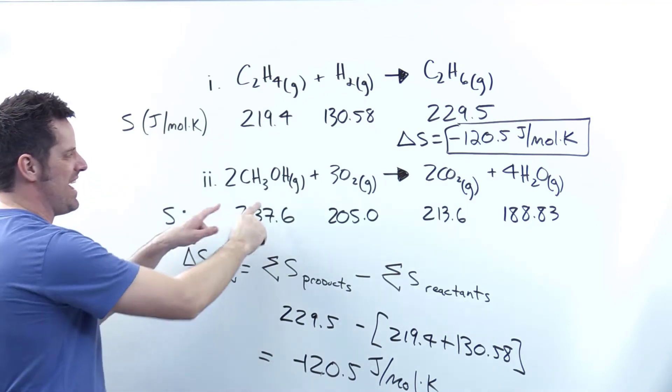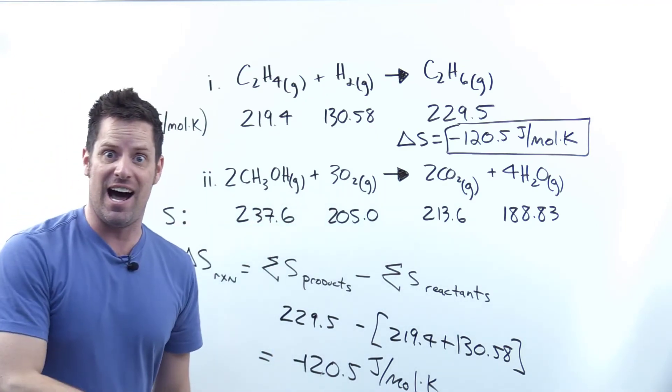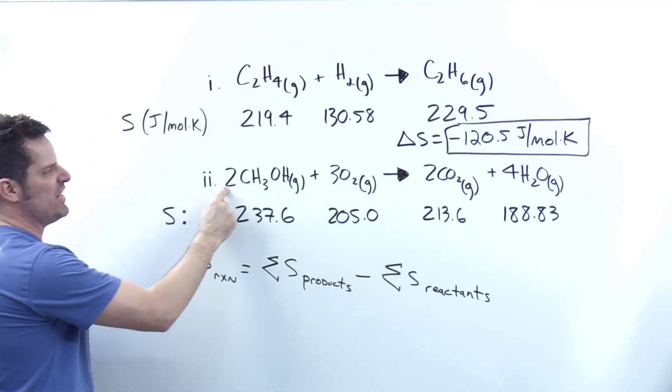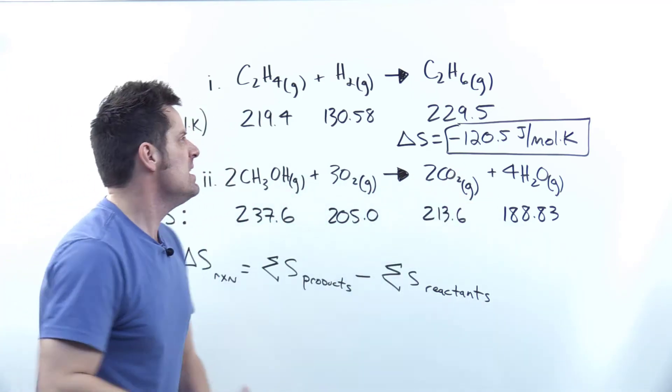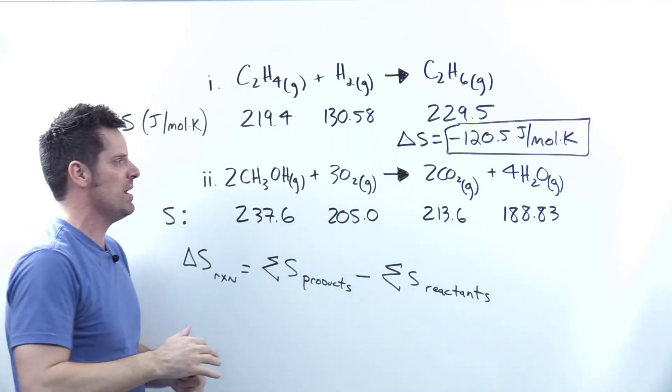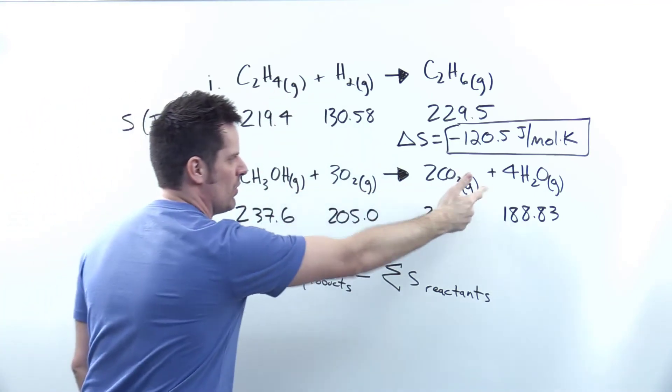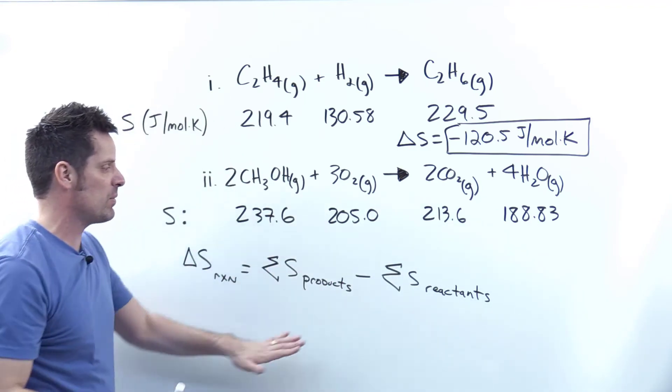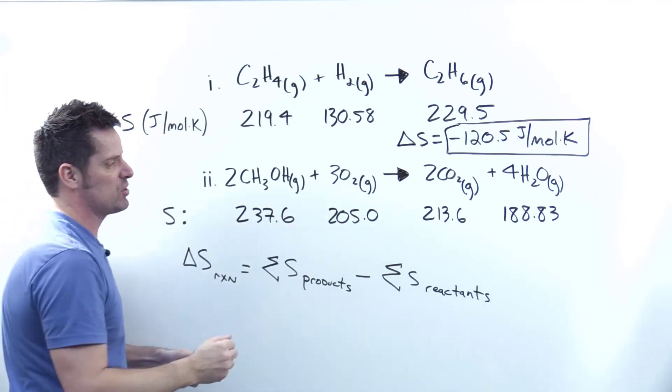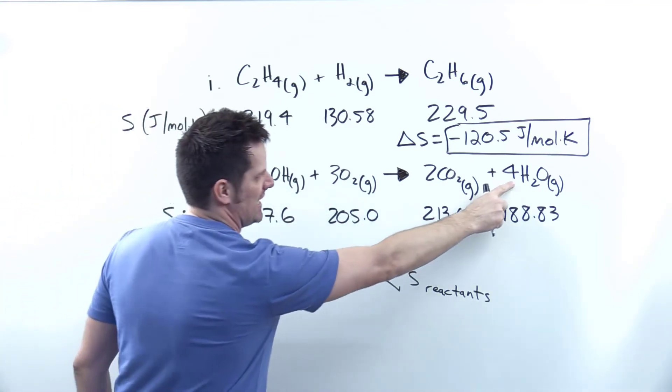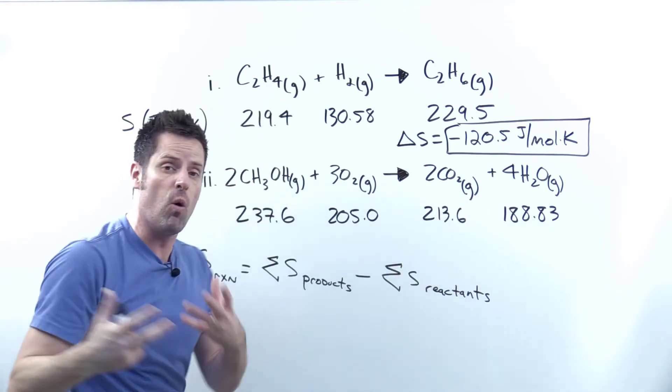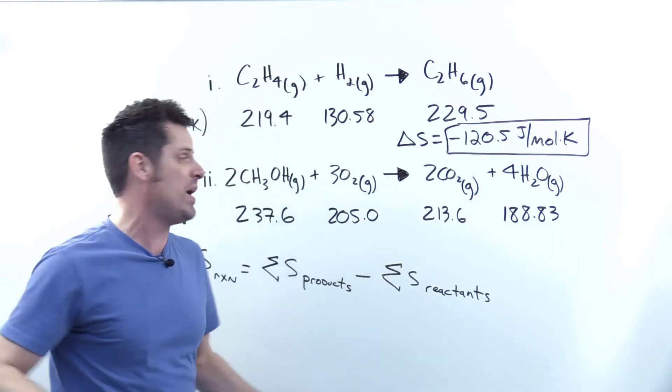Now I'm going to clear the board and do the analogous thing for reaction II. Reaction II is a little more involved because there are coefficients next to these reactants and products that are not one. Up here we had all ones, but over here we've got a two and a three and a two and a four, and that all comes into play when we insert our numbers into this equation. If I want to find the total sum of all the entropy values for the products, I have to multiply that number by four because I have four H2Os, or four molar equivalents of H2O in this balanced equation.